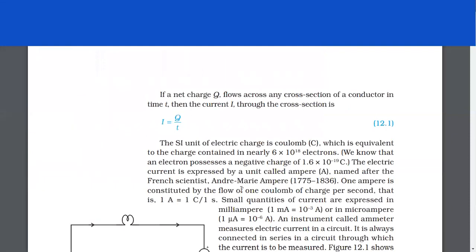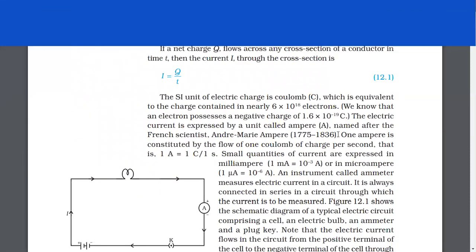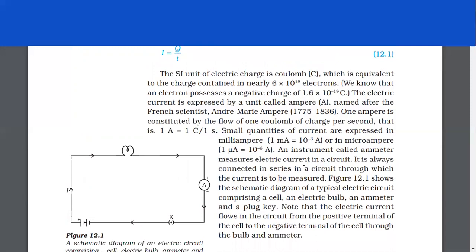If a net charge Q flows across any cross-section of a conductor in time T, then the current I through the cross-section is I = Q/T. The SI unit of electric charge is coulomb, which is equivalent to the charge contained in nearly 6 × 10¹⁸ electrons. We know that an electron possesses a negative charge of 1.6 × 10⁻¹⁹ coulombs. The electric current is expressed by a unit called ampere, named after the French scientist André-Marie Ampère. 1 ampere is constituted by the flow of 1 coulomb of charge per second, i.e., 1 A = 1 C / 1 s.